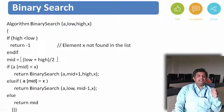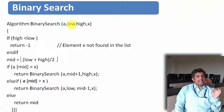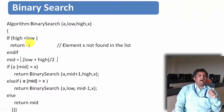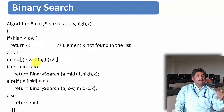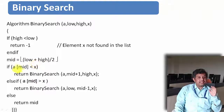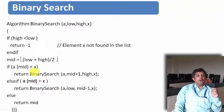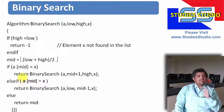Let us see the algorithm. The parameters we are passing are: A as an array, low as the lower subscript of the array, high as the higher subscript of the array, and x is the element that we are searching. If high is less than low, then we will say that element x is not found in this particular array. Otherwise, we are going to find the mid value, that is (low + high) / 2. If we get any fraction value, we will round it down. If the mid value is less than x, then we change low to mid plus 1; high remains the same. Similarly, if mid value is greater than x, then high will be reduced to mid minus 1. Depending on the condition, we are discarding a part of the array.